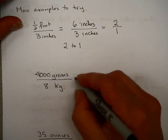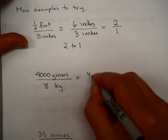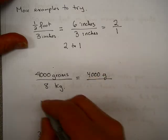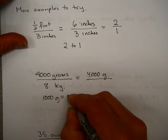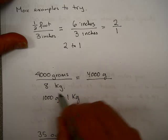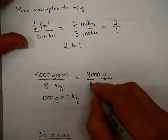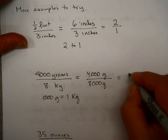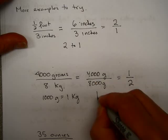4,000 grams to 8 kilograms. Grams is the smaller unit. So I'm going to do 4,000 grams. There are 1,000 grams in 1 kilogram. Taking 8 kilograms, multiplying by 1,000, I have 8,000 grams. And this is 1 over 2, or 1 to 2.